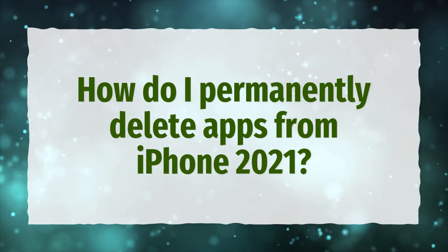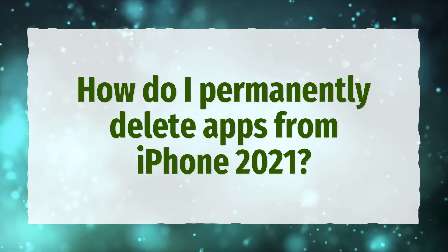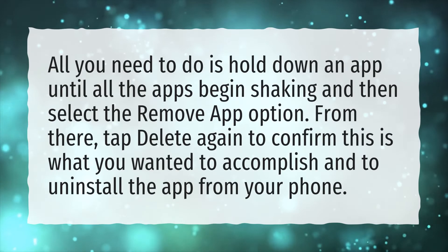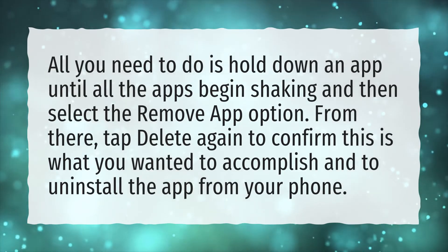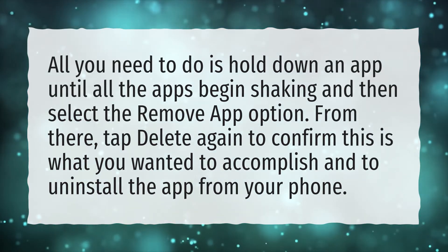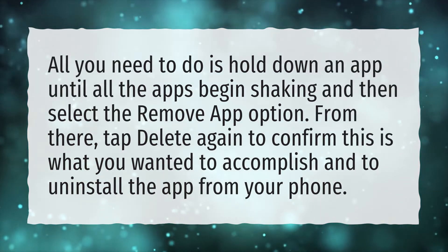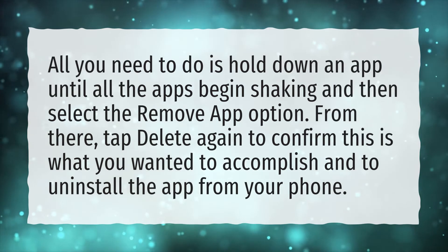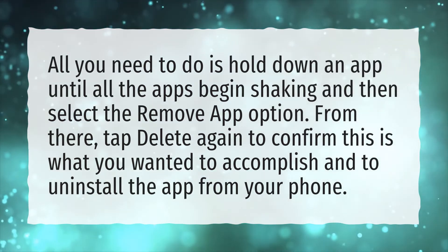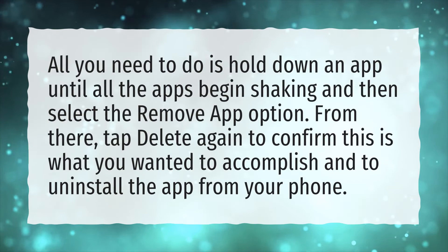How do I permanently delete apps from iPhone 2021? All you need to do is hold down an app until all the apps begin shaking, and then select the Remove App option. From there, tap Delete again to confirm this is what you wanted to accomplish and to uninstall the app from your phone.